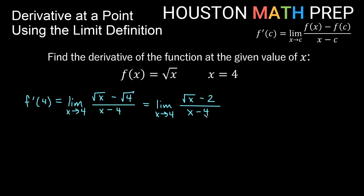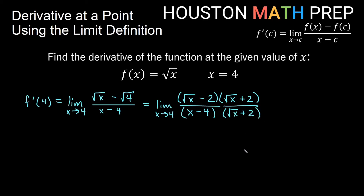From our video about evaluating limits algebraically, when you have a root plus or minus something as a two-term numerator or denominator, you multiply by the conjugate. So in this example we will multiply by (√x + 2). Remember the conjugate is the same two terms with the opposite operation in between. We do the same thing on top and bottom so we don't change the value of the fraction.